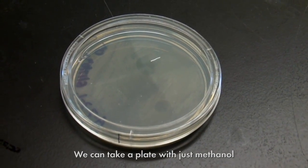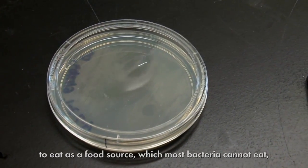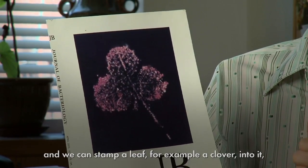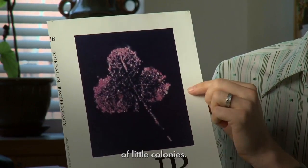We can take a plate with just methanol to eat as a food source, which most bacteria cannot eat, and we can stamp a leaf, for example a clover, into it and you end up getting this kind of constellation of little colonies.